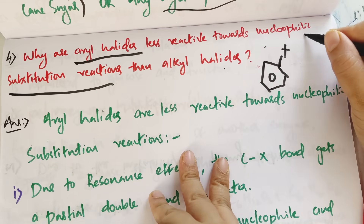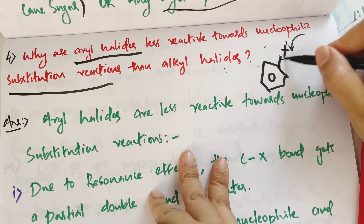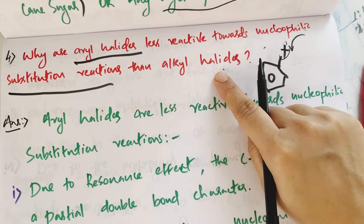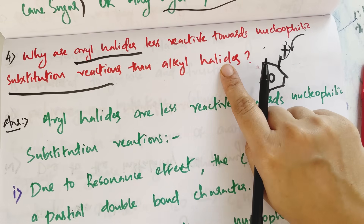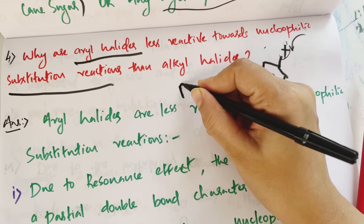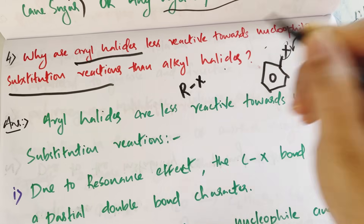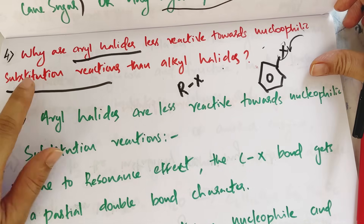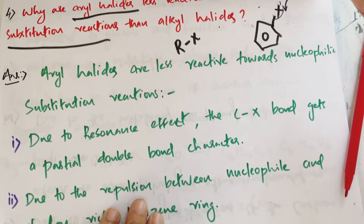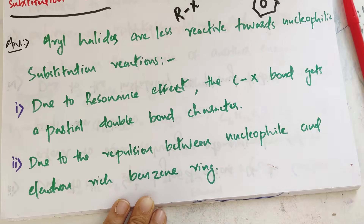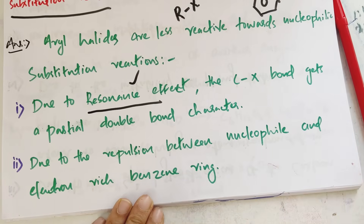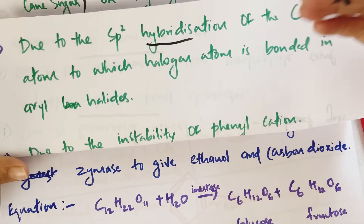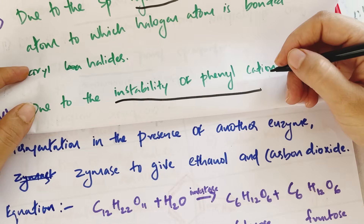Aryl halides are less reactive towards nucleophilic substitution reactions. The reasons are: 1. Resonance effect, 2. Steric repulsion, 3. Hybridization, 4. Instability of phenyl cation.